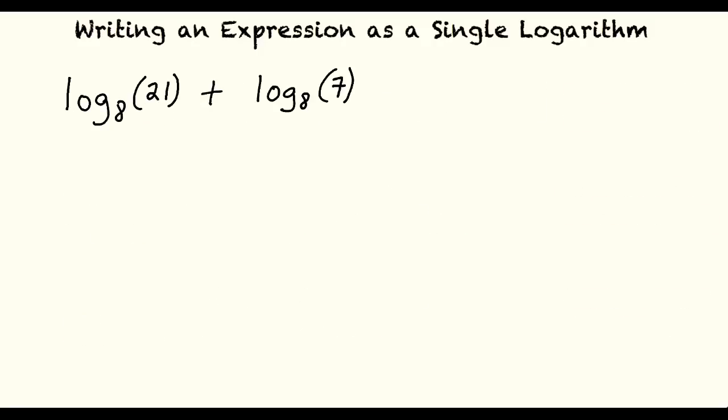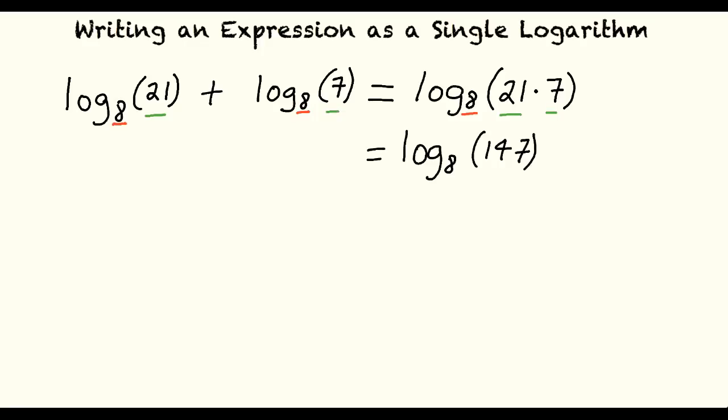Log base 8 of 21 plus log base 8 of 7. Recall that our answer will have the same base as both of the original logarithmic expressions. The argument of the simplified expression will be the argument of the first term multiplied by the argument of the second term. 21 times 7 equals 147, resulting in our final answer of log base 8 of 147.